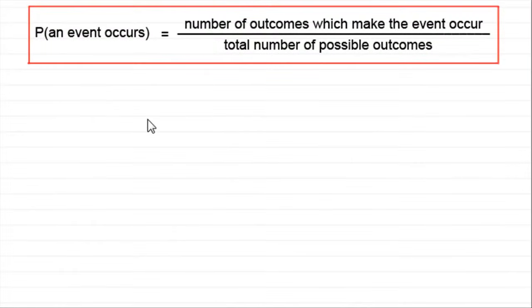Hi, in this video I want to show you how we can calculate probability using permutations and combinations. To do that we use the classical formula for probability which is that if you want to know what the probability of an event is, then you've got to work out the number of outcomes which make the event occur and divide that by the total number of possible outcomes. I've got a couple of examples that will demonstrate this.